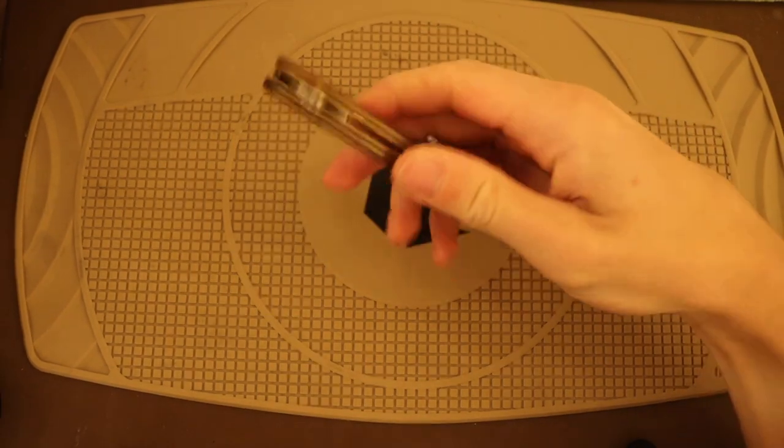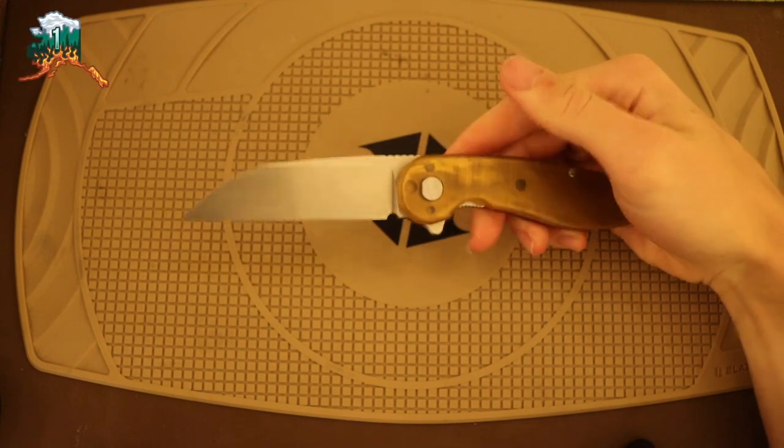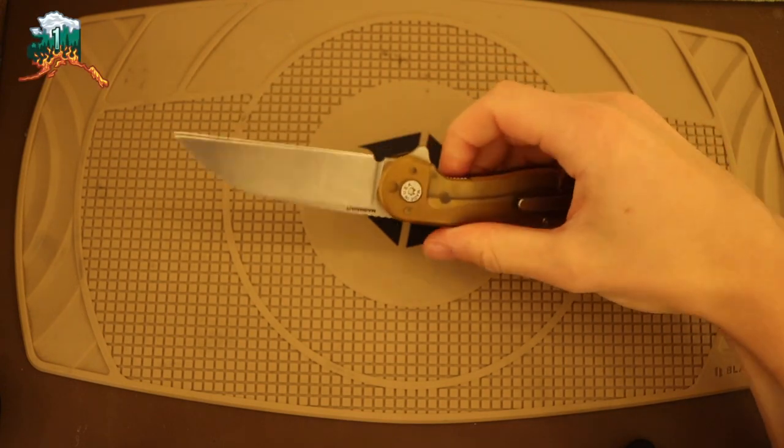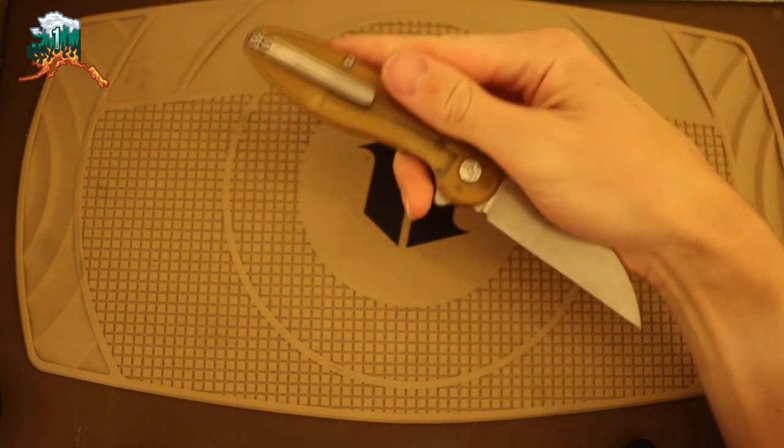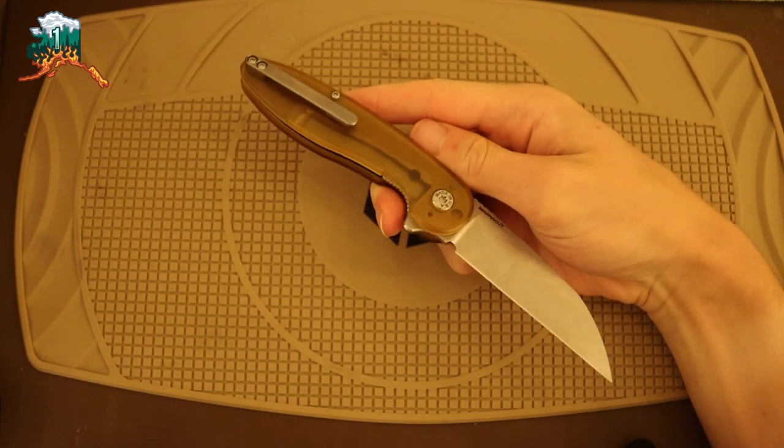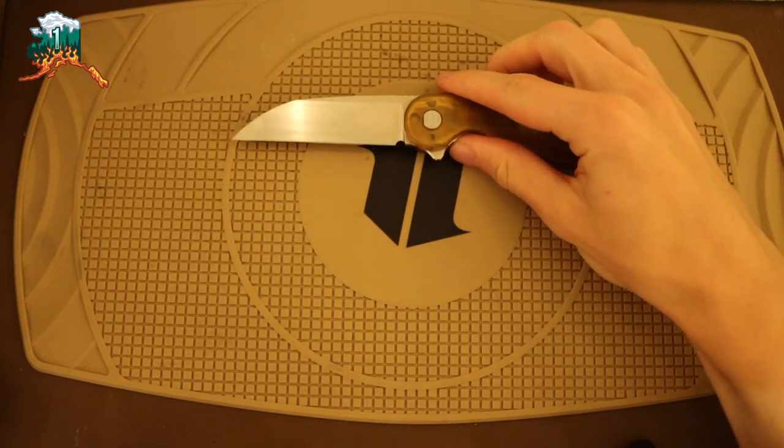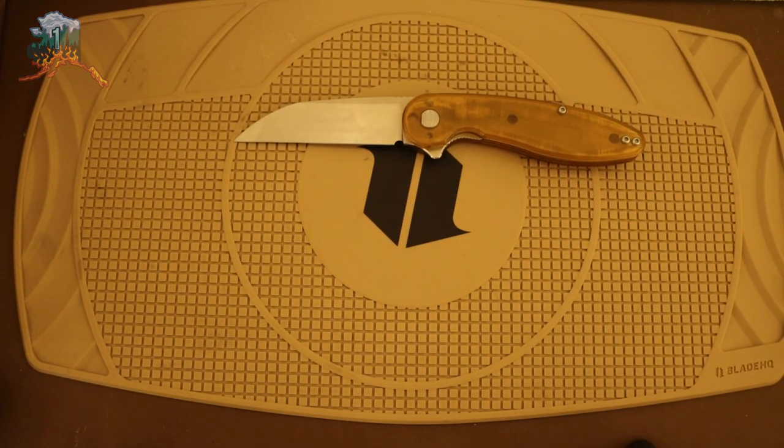Alright guys, today we're going to be taking a look and breaking down the American Blade Works, or ABW, Model One. We'll be taking a look at what is on the inside of probably one of my favorite flippers, if not folders of the year, and hopefully you guys enjoy taking a look at this really cool blade.